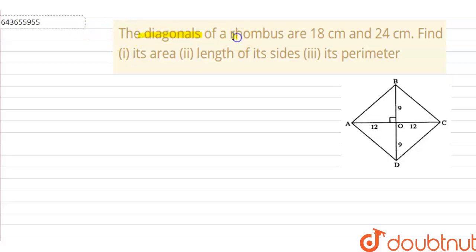Hello everyone. The sum is: the diagonals of a rhombus are 18 centimeter and 24 centimeter. Find its area, length of its sides, and its perimeter.